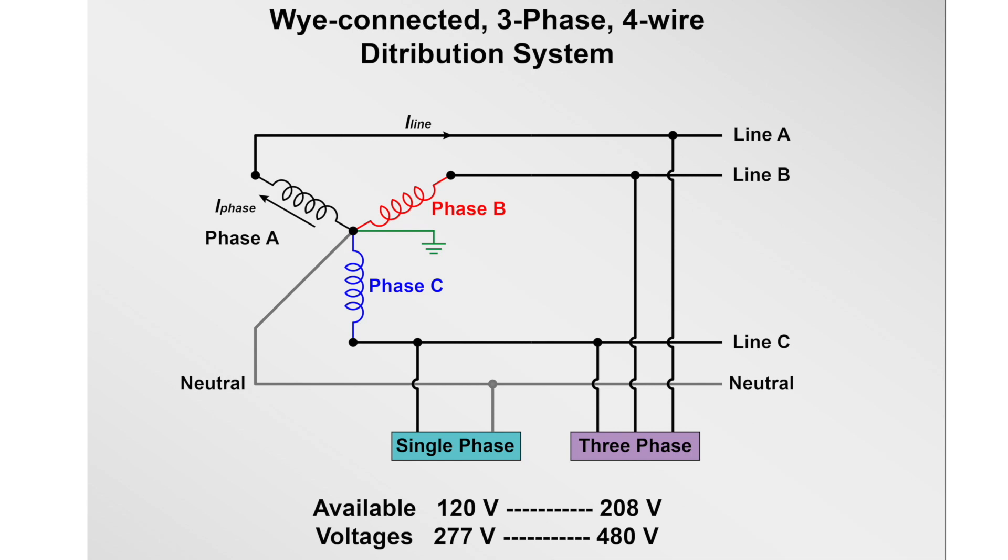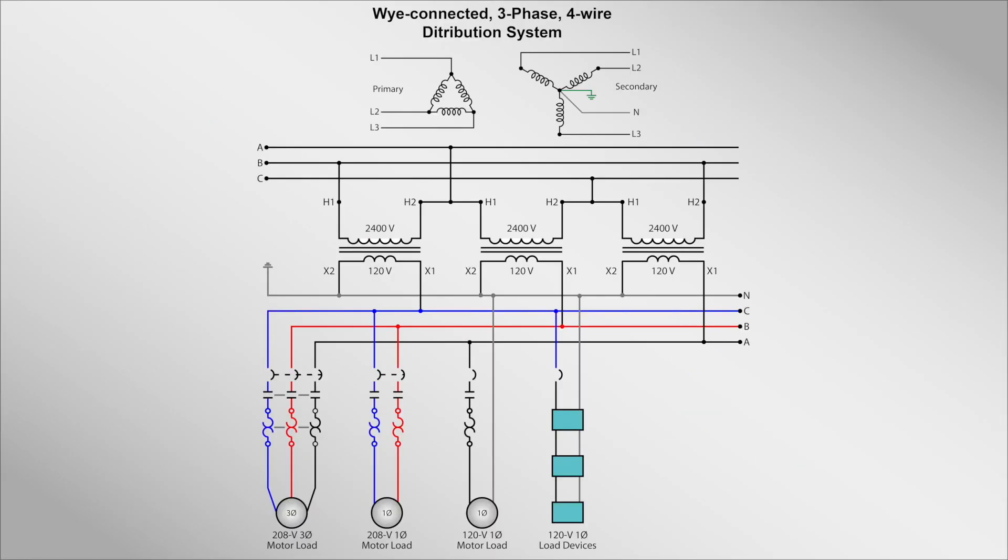The delta-to-Y is the most commonly used three-phase connection. We provided a drawing showing the delta-to-Y configuration. The secondary provides a neutral point for supplying line-to-neutral for single-phase devices and is also grounded for safety reasons.